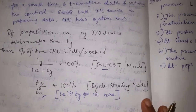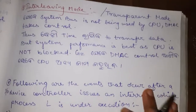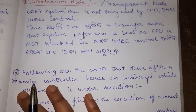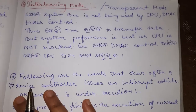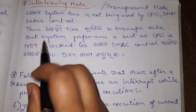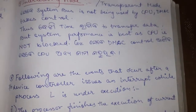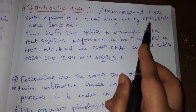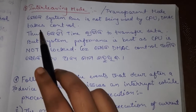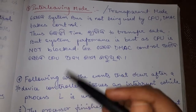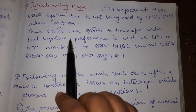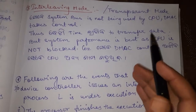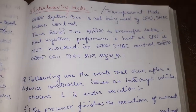The third mode is interleaving mode, also called transparent mode. Suppose the teacher is cracking a joke, not exactly teaching, or has given an assignment — in that case the system bus is not being used by the CPU. So DMA takes control, takes the attendance sheet, and tells the students to update it. This way, more time is not wasted for the CPU since the CPU was not using the system bus. That is interleaving mode or transparent mode.